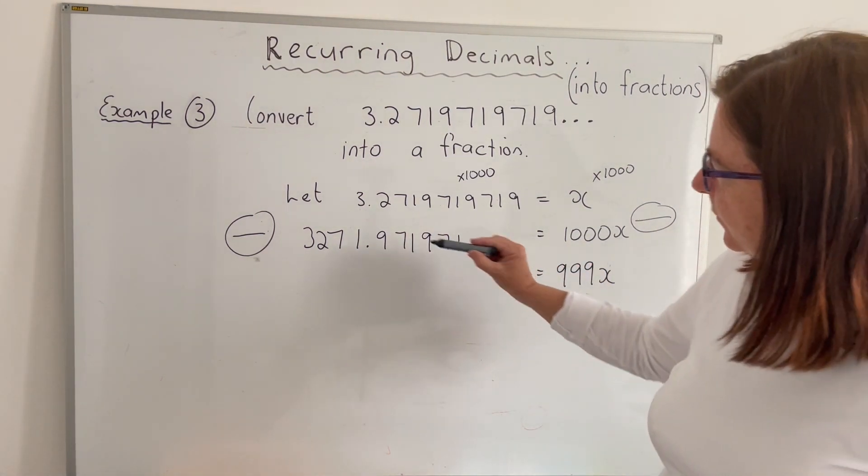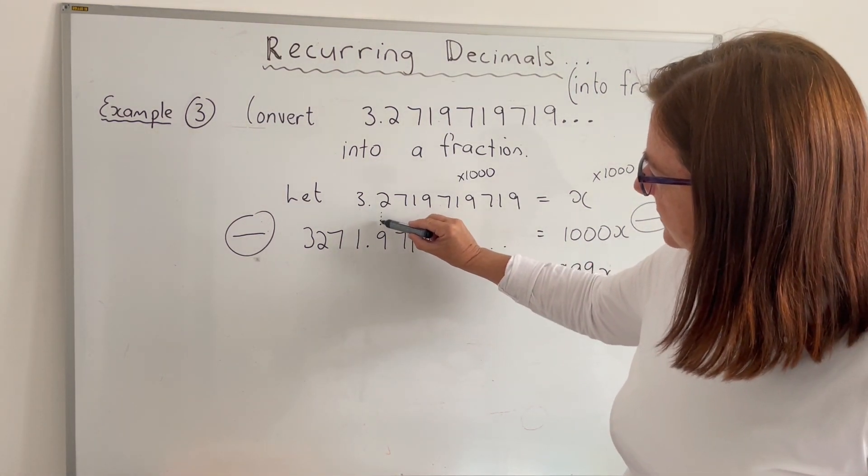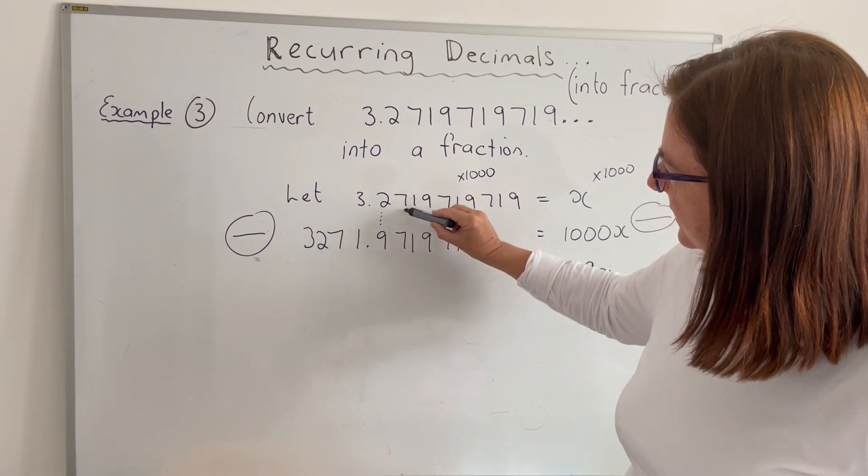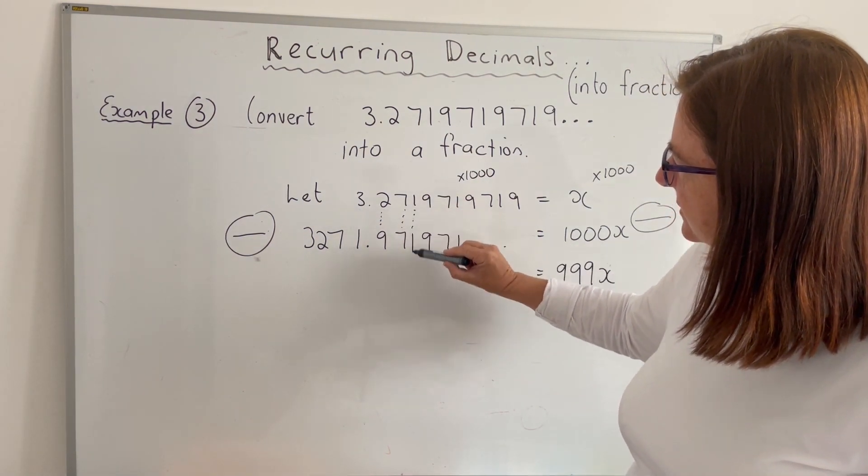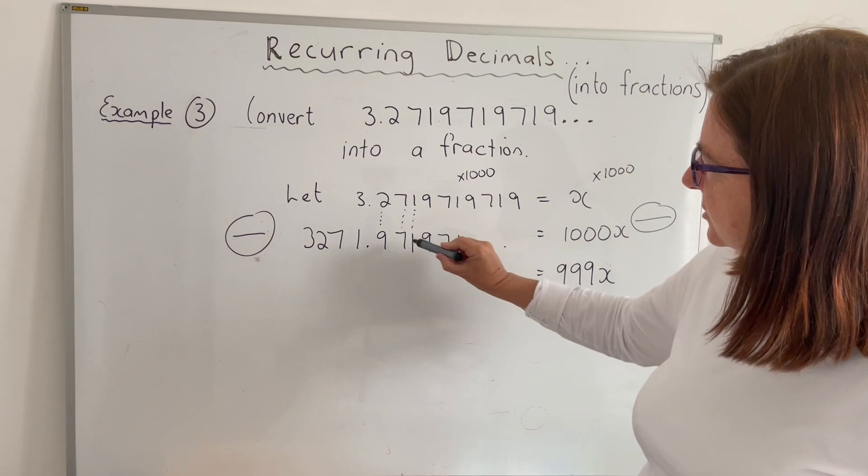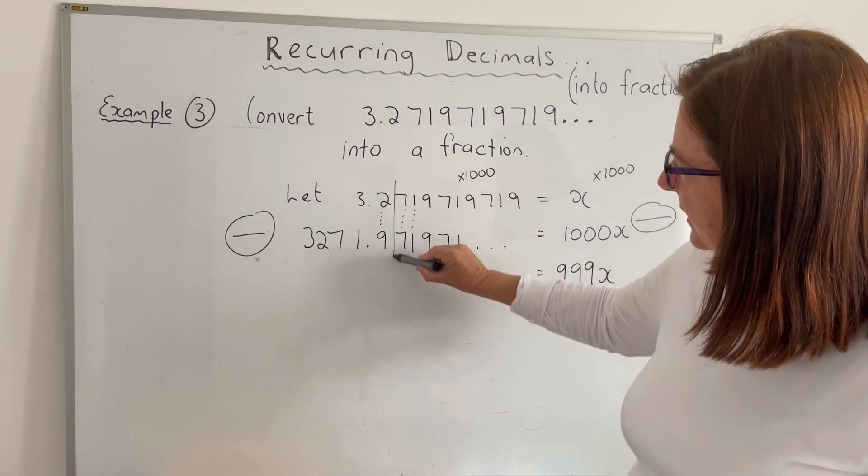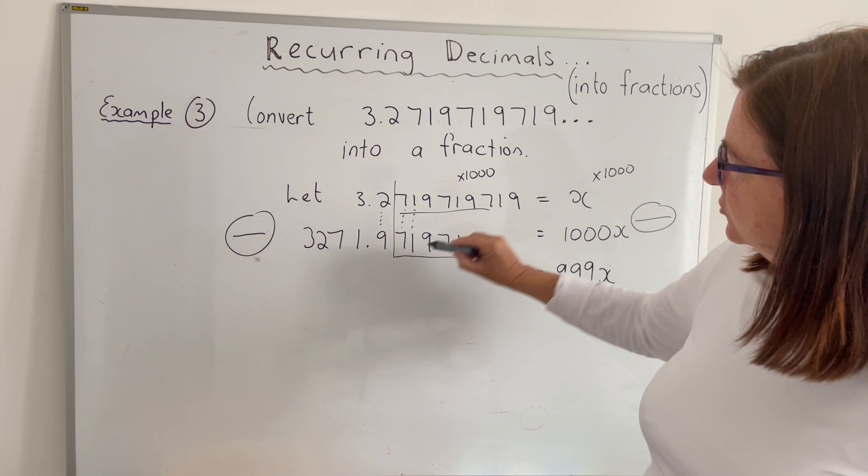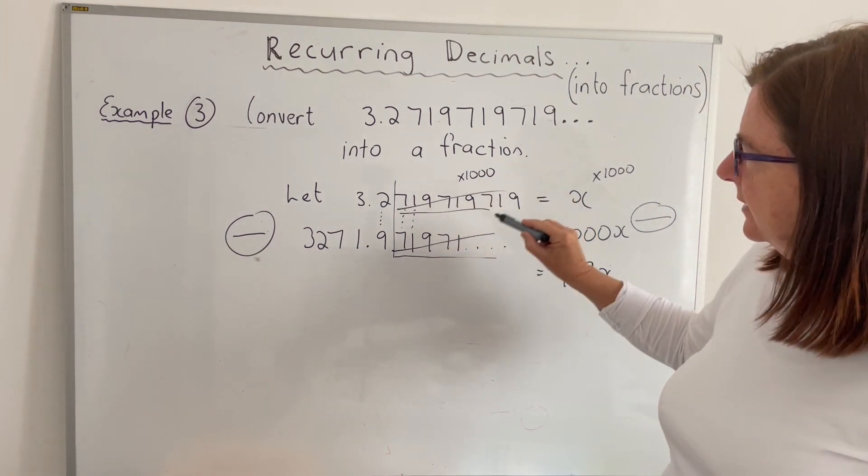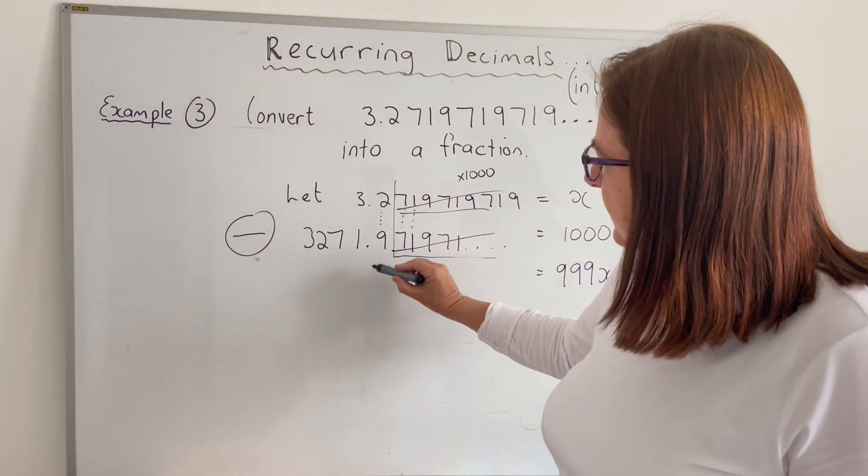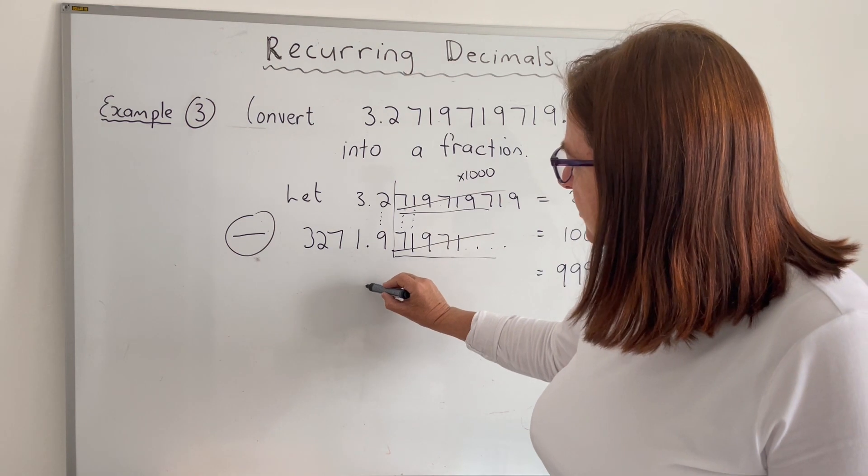And on this side here, it's important that we line up the decimals in the correct places. That would be the tens, hundreds, thousands. Now if we subtract these, you'll notice that from here, these are the same. So if I subtract, they will disappear.